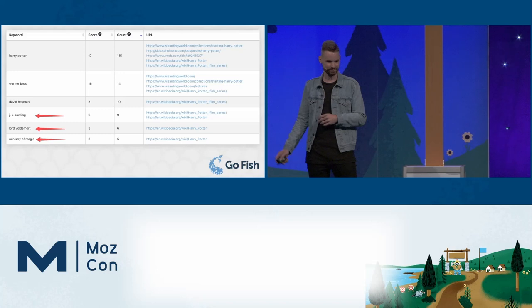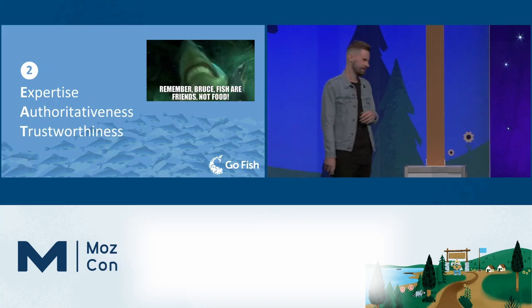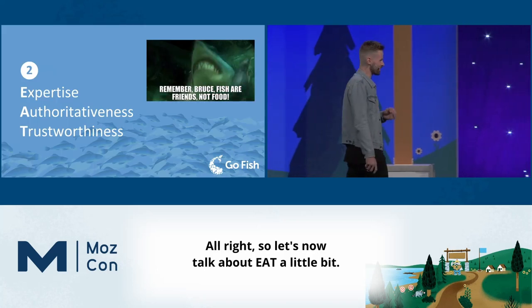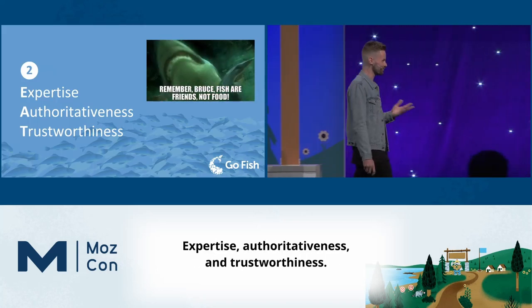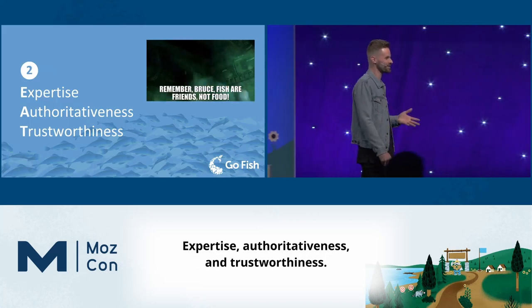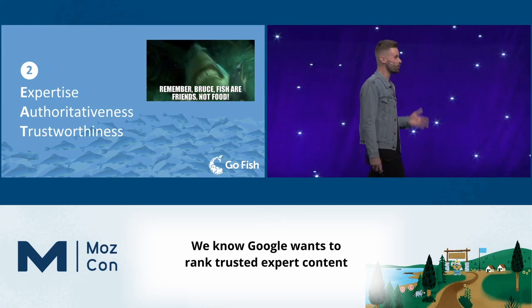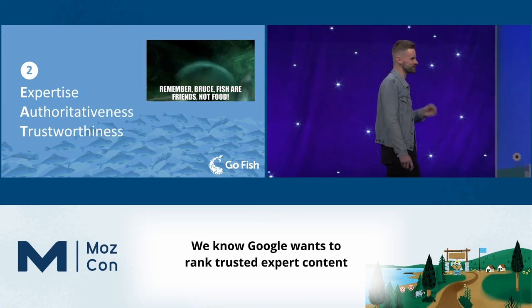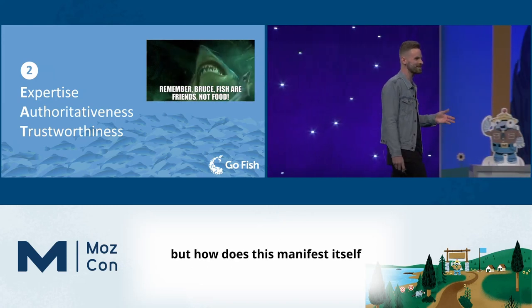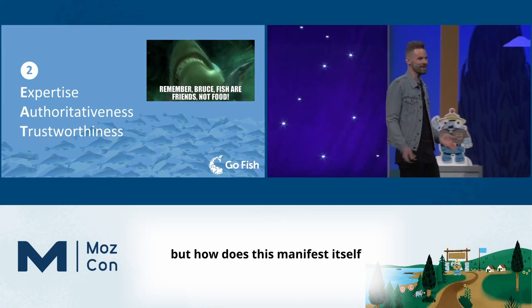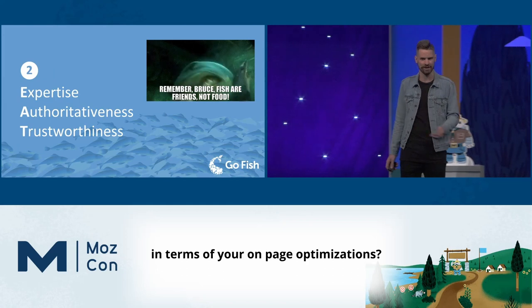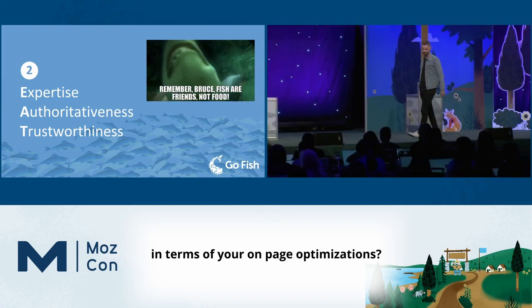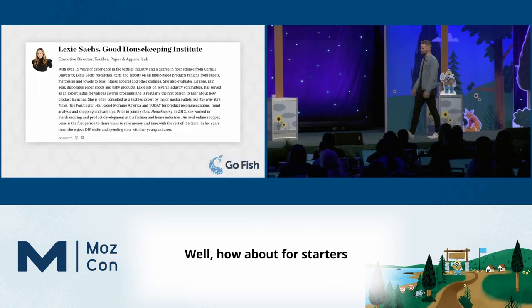Now let's talk about E-A-T — expertise, authoritativeness, and trustworthiness. We know Google wants to rank trusted expert content, but how does this manifest in terms of your on-page optimizations?